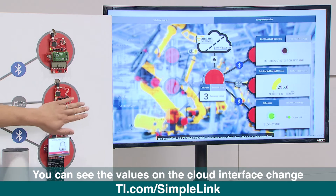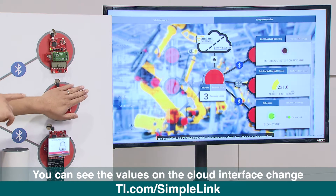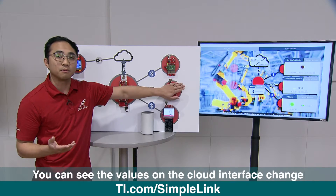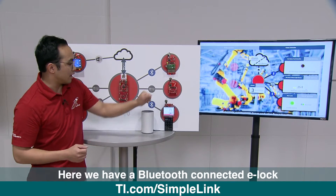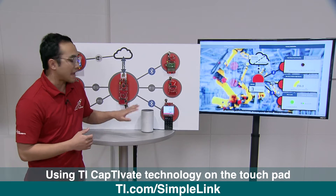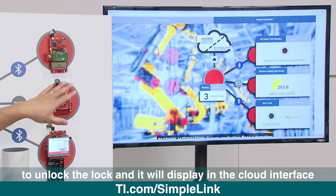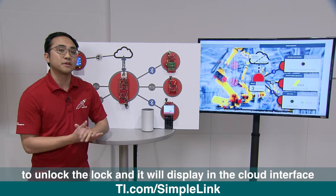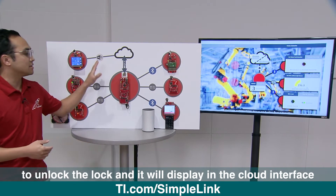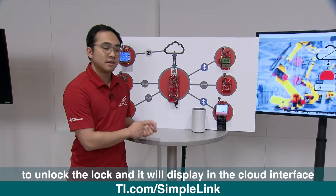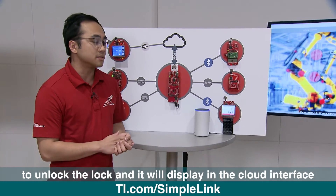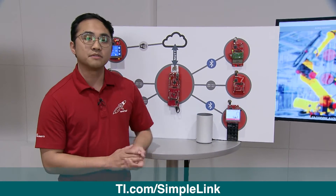To demonstrate that, I've got an ambient light sensor here. When I cover that up, you'll see that the values in the cloud interface are updating appropriately. I also have a Bluetooth-connected e-lock using our Captivate technology from our MSP430 product line. I can type in a key code, and the status of the lock will update locally as well as reflect in our cloud graphical interface. Because this is talking to the cloud, we're able to tap into voice assistants and services such as Amazon Alexa, Google, and Microsoft services. To learn more about Captivate, I'm going to hand it over to Dennis.